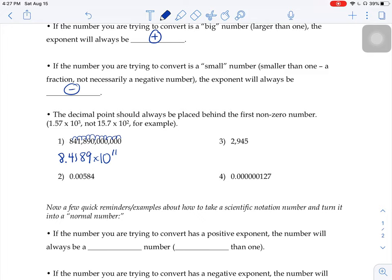In number 2, I'm going to follow the same process, put the decimal behind the first number. That's not a zero, so it's going to go between the 5 and the 8 times 10.